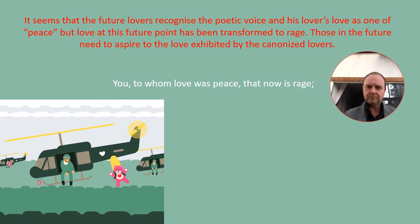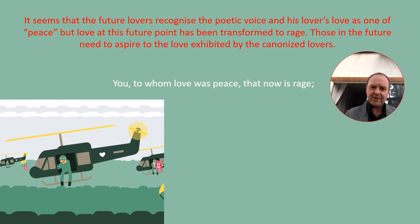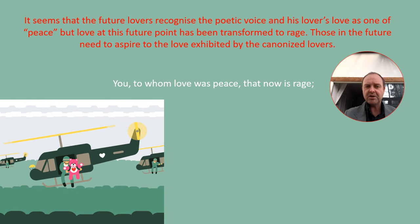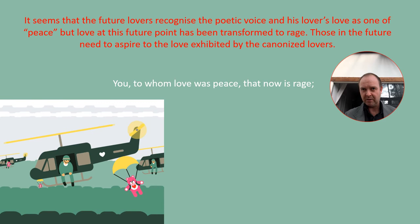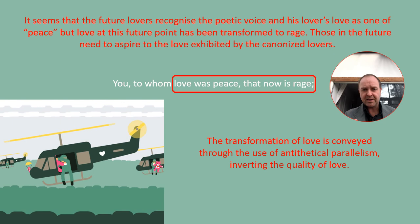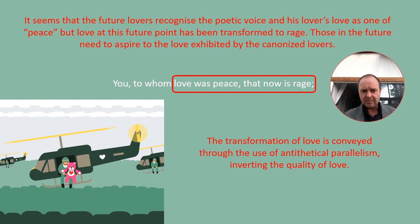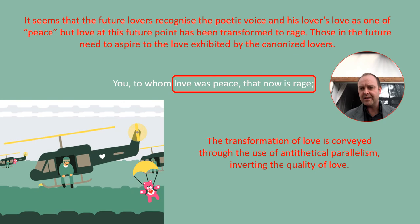It seems that the future lovers recognise the poetic voice and his lover's love as one of peace. But love at this hypothetical future point has been transformed to rage. Those in the future need to aspire to the love exhibited by the canonised lovers, so Donne's imagining a time where rather than being criticised for being in love, people will actually appreciate the value of this love. The transformation of love is conveyed through antithetical parallelism, inverting its quality — love was peace, now is rage — complementing that sense of the bizarre criticism of those who love peacefully and beautifully and yet are criticised for it.